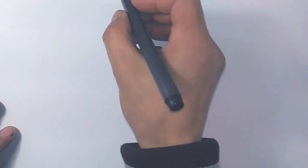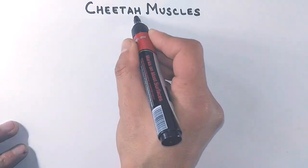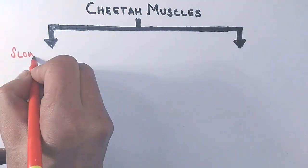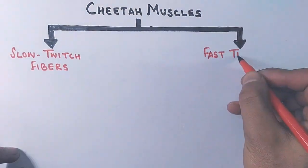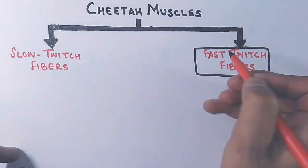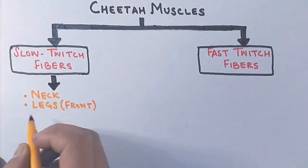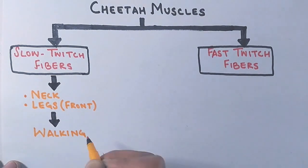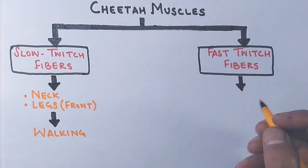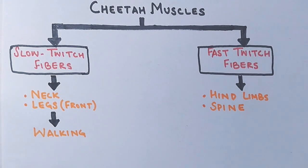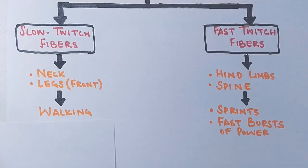Now let's look at the muscles in the cheetah, in which we find two types of fibers: slow twitch fibers and fast twitch fibers. Slow twitch fibers are present in the neck and front legs and are used in walking, while fast twitch fibers are present in the hind limbs and spine and are used when the cheetah sprints, providing fast bursts of power.